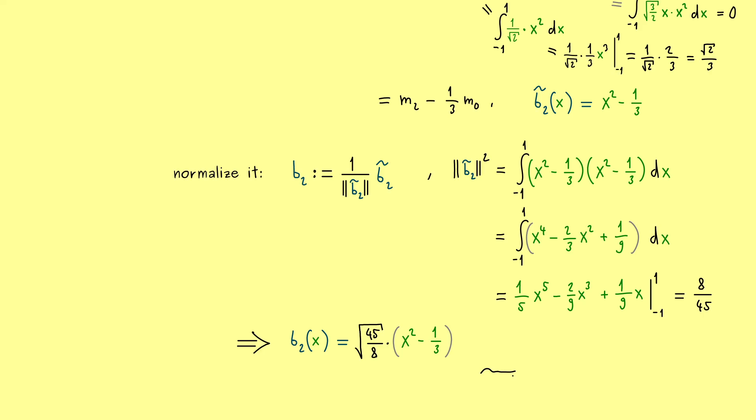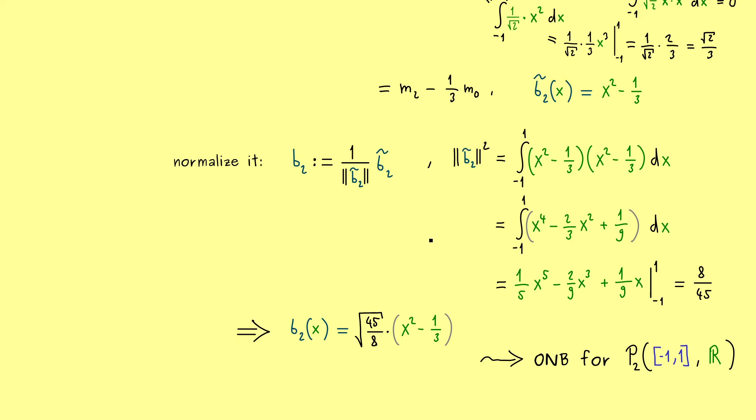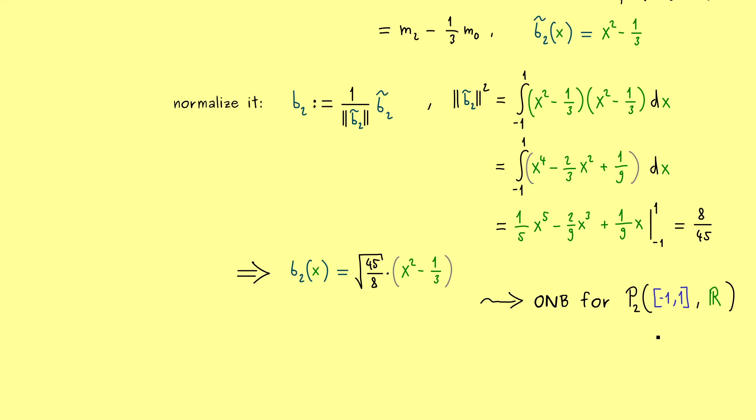We have found our nice ONB for the polynomial space. So at least for p2, now we have an orthonormal basis. However, you see we can just extend the whole procedure to find an ONB for pn. And there I can tell you, the polynomials that come out there, maybe with other normalization factors, are called Legendre polynomials. And they are helpful exactly because they form an ONB in this abstract function space. So with these Legendre polynomials, it's possible to do orthogonal projections and so on.